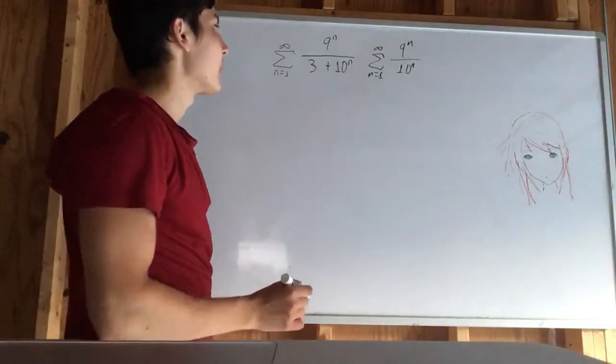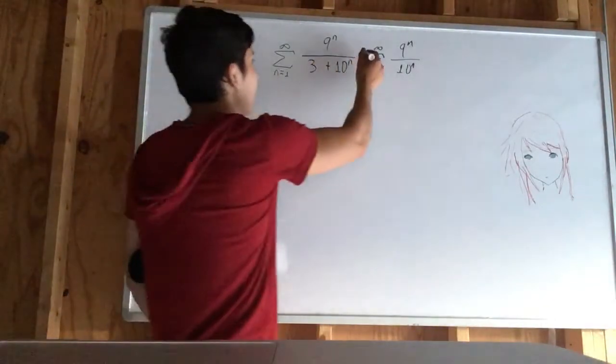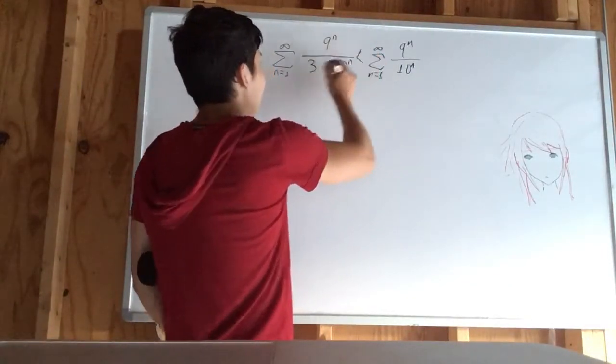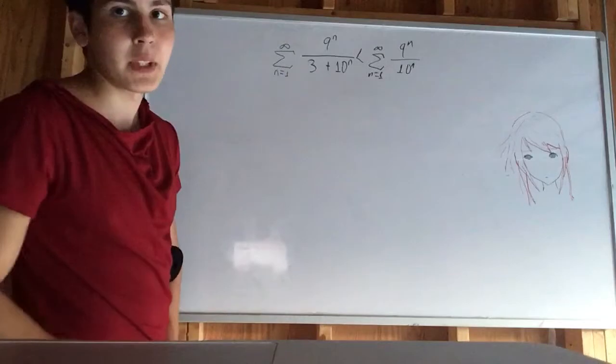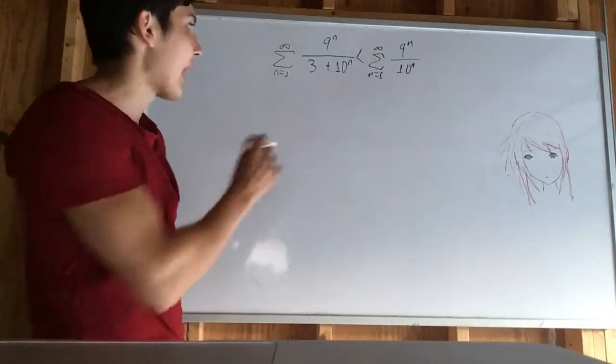So that would be a very similar series right there. We're just adding 3. That just means this one's larger. This one's less because we have a larger denominator. So for sure this one would be smaller than that one.